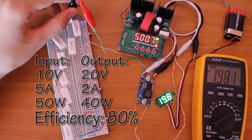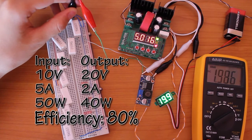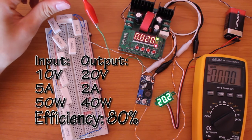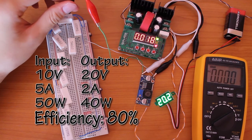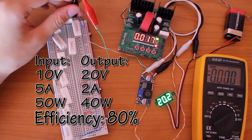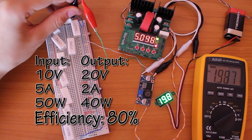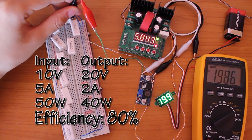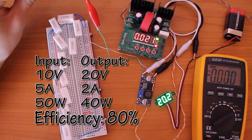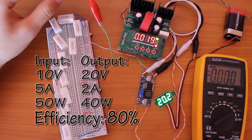We have 10 volts and 5 amps on the input, which gives 50 watts of power. And on the output we have 20 volts with 2 amps, which is 40 watts. At these settings we get a conversion efficiency of around 80%.